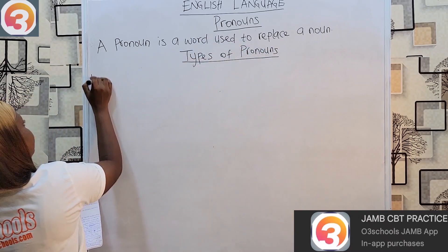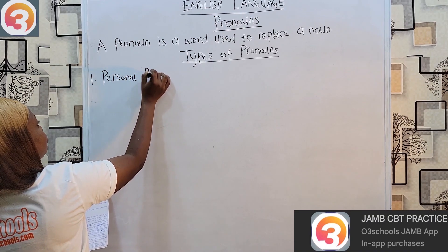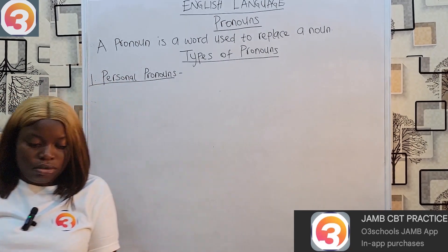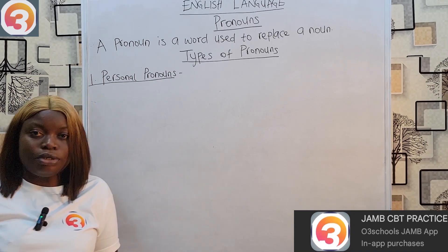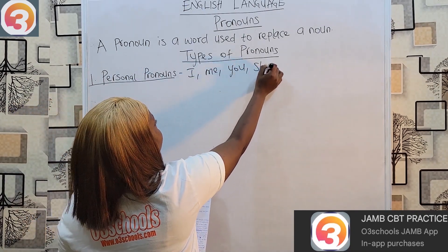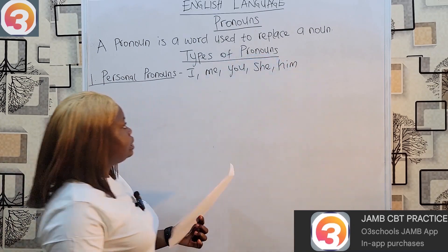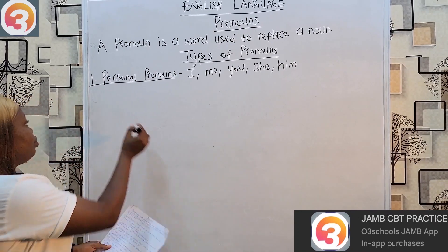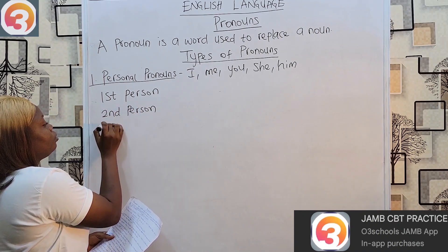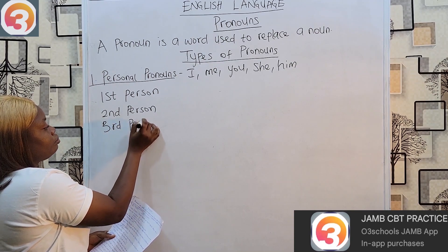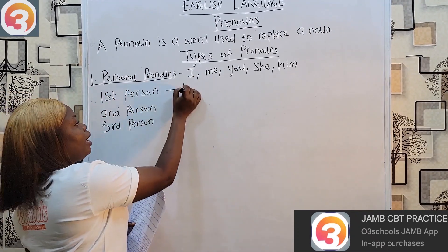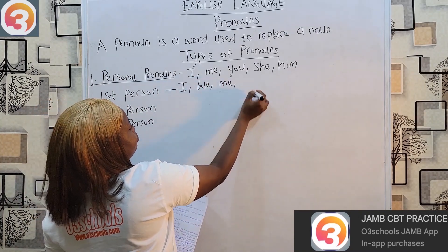One: we have personal pronouns. Personal pronouns are pronouns used to represent persons. Examples include: I, me, you, she, he — all of these are personal pronouns. I can group personal pronouns into first person, second person, and third person. First person refers to the person speaking: I, we, me, us.